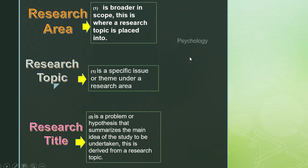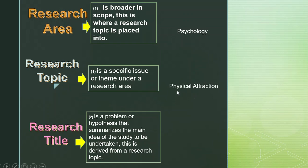In the previous slide, psychology is an example of a research area, while physical attraction is an example of a research topic. Psychology is a research area because it is a discipline and is broader in scope and general in form, while physical attraction is one of the topics that can be tackled under psychology — it is more specific than psychology.